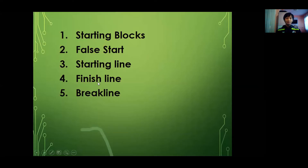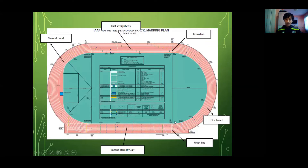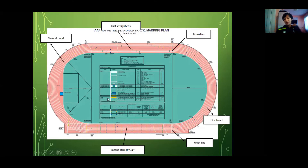Starting line, finish line, and brake line. Let's start with the finish line. The oval has four parts: the first bend is the first part; the first straightway is the second part; the second bend is the third part; and the second straightway is the last part before the finish line. There is only one finish line — because if there are many finish lines, the athletes would never lose.